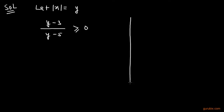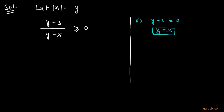We shall solve it step by step. In the first step, we shall equate the numerator to 0: y minus 3 equals 0, which means y equals 3. Now we shall equate the denominator to 0: y minus 5 equals 0, so y equals 5.